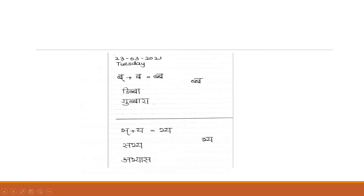Next examples with the 'B' conjunct: B, A, D — Dibba. B, A, R — Gubbara. Then Sabji once more.